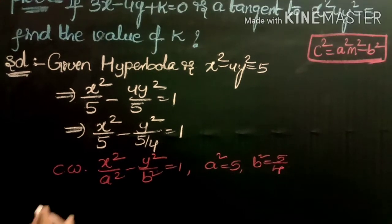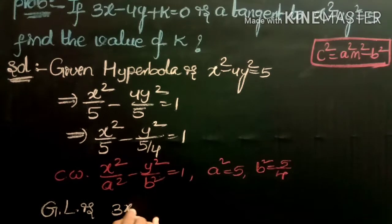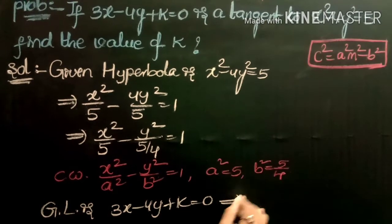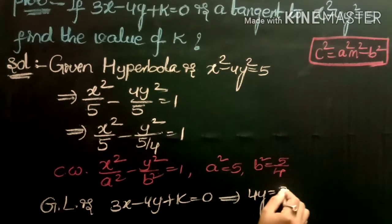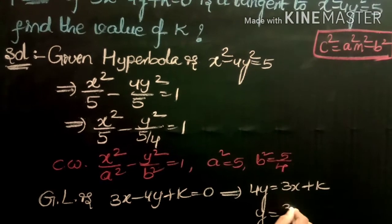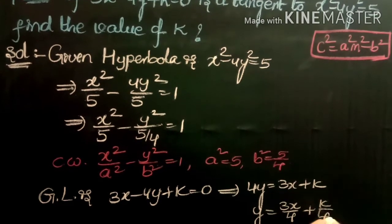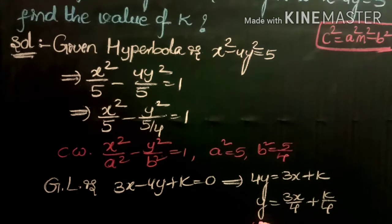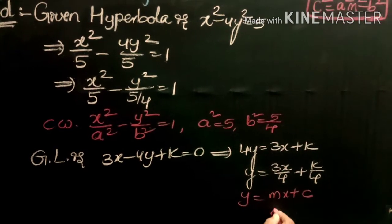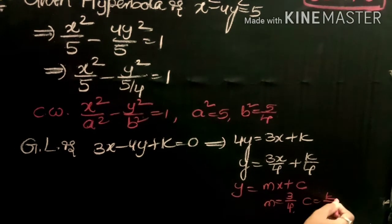The given line is 3x minus 4y plus k equals 0. Rearranging: 4y equals 3x plus k, so y equals (3/4)x plus k/4. Comparing with y equals mx plus c, we get m equals 3/4 and c equals k/4.